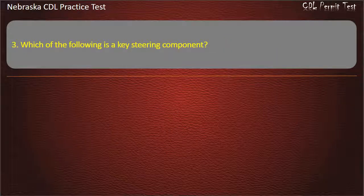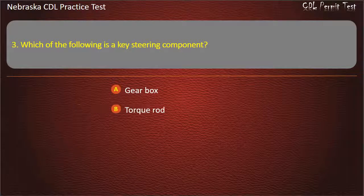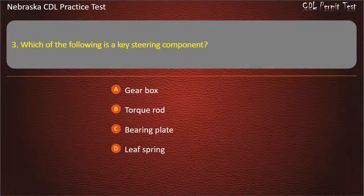Question 3. Which of the following is the key steering component? Gearbox, torque rod, bearing plate, leaf spring. Answer: Gearbox.